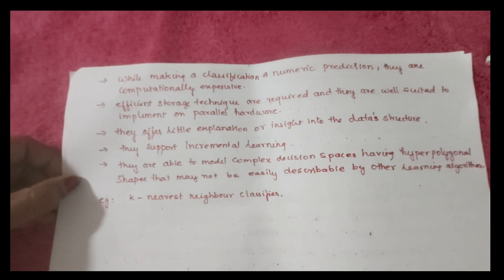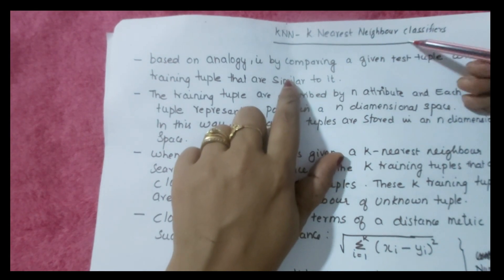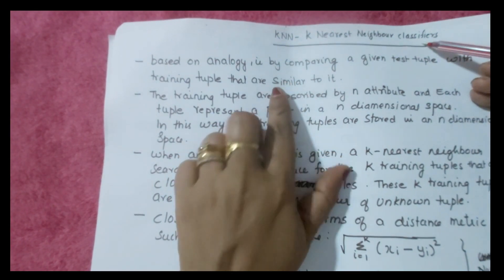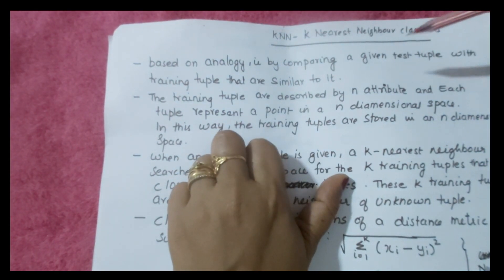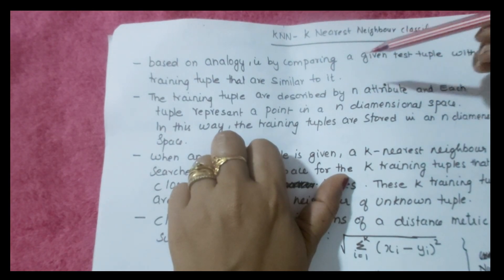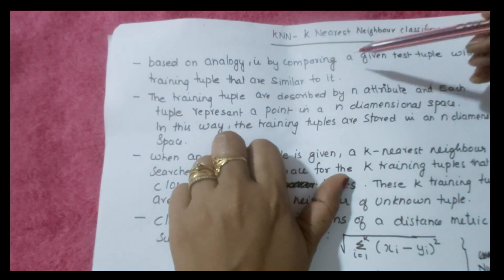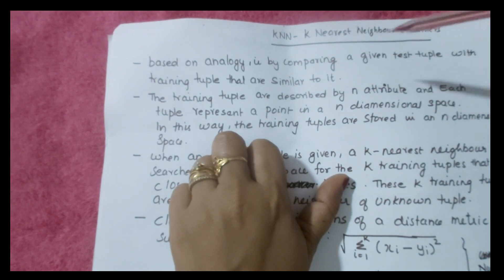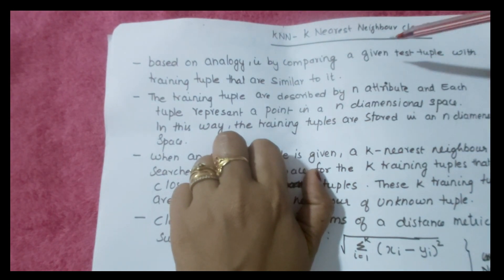The k-nearest neighbor (KNN) classifier is based on analogy — by comparing a given test tuple with training tuples that are similar to it. It works by comparing a given test tuple with the training tuples that are similar to it.